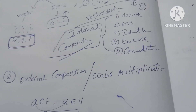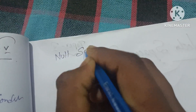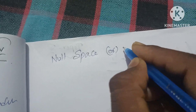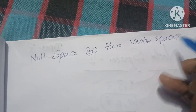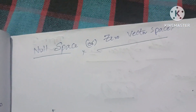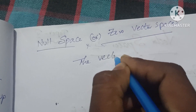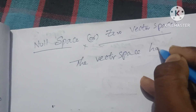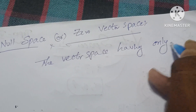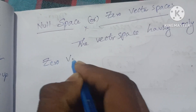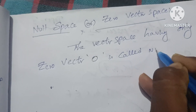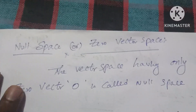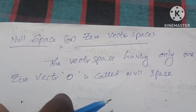The first topic is vector space, and the next topic is Null Space. Null Space is the vector space having only one zero vector. A vector space containing only one zero vector is called a Null Space.